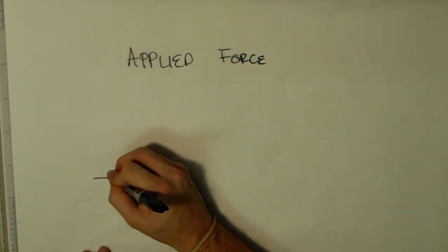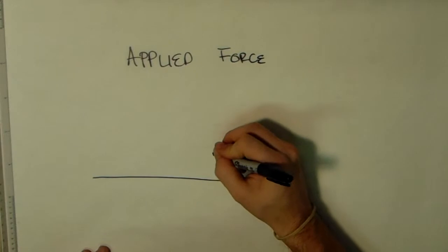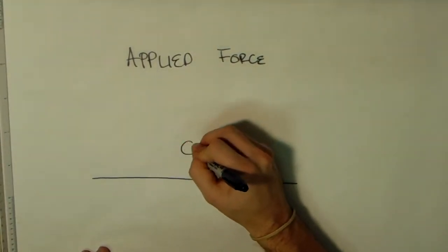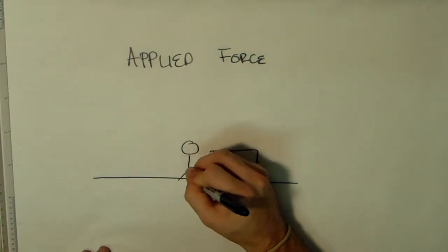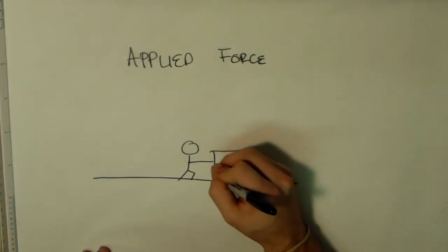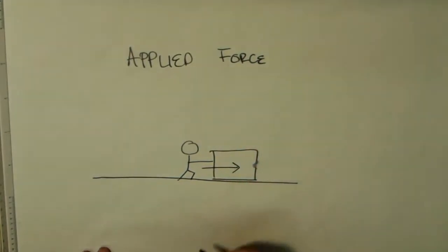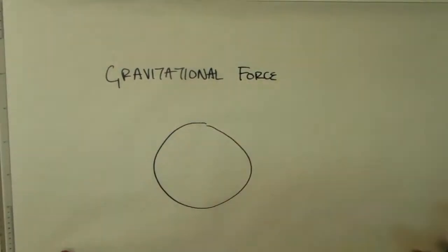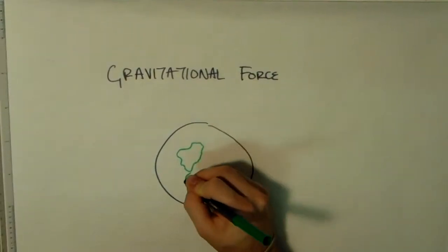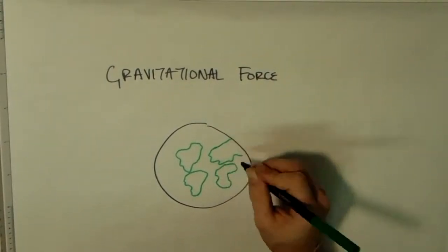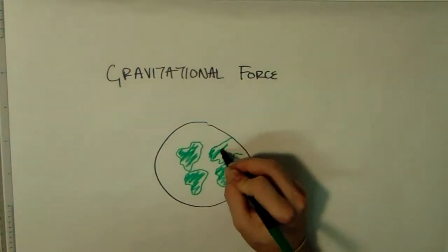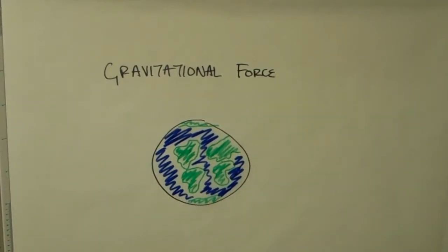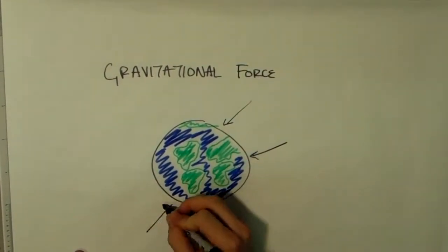Applied force is a force acting on an object by a person or another object. Gravitational force is the force with which the Earth, Moon, or other massively large objects attract another object toward itself. By definition, this is the weight of the object. All objects upon Earth experience a force of gravity directed downwards toward the center of the Earth, always equal to the weight of the object, found by the equation F equals mass times gravity, where gravity equals 9.8 N per kilogram.